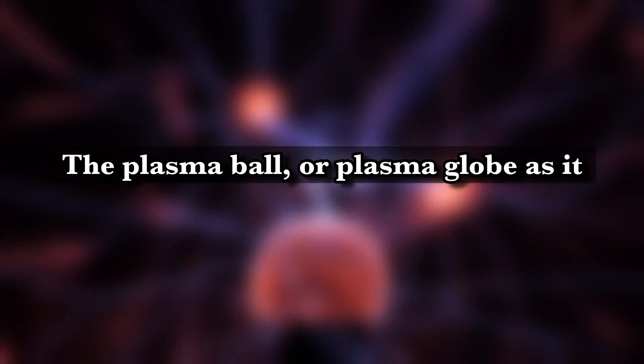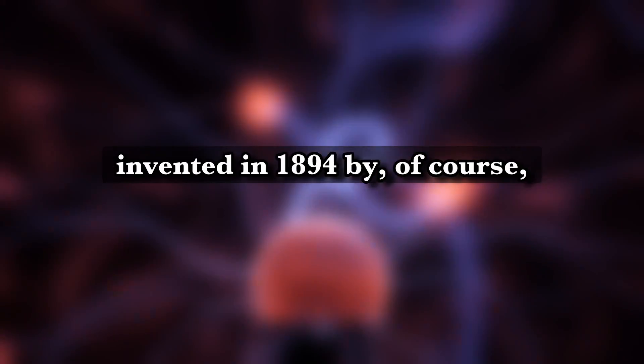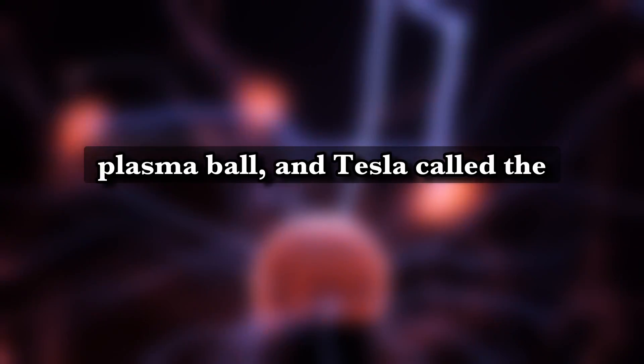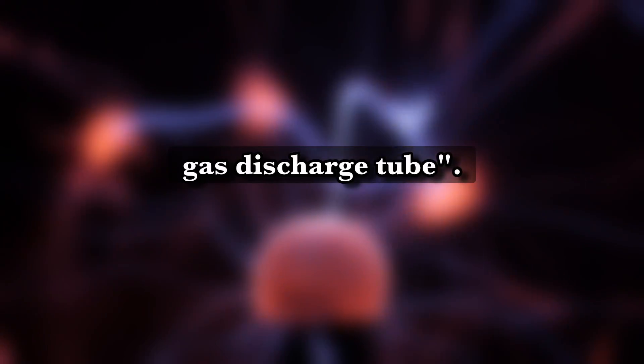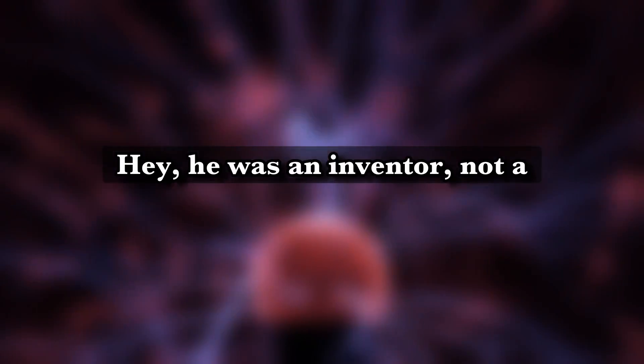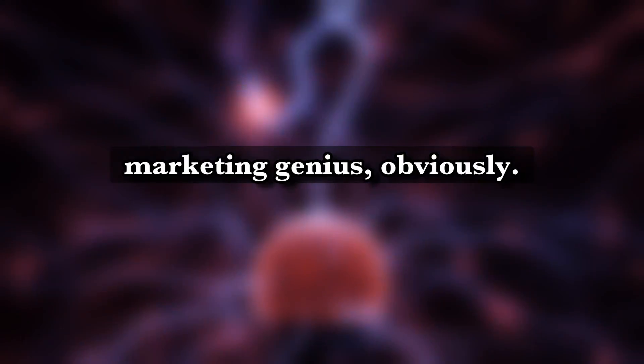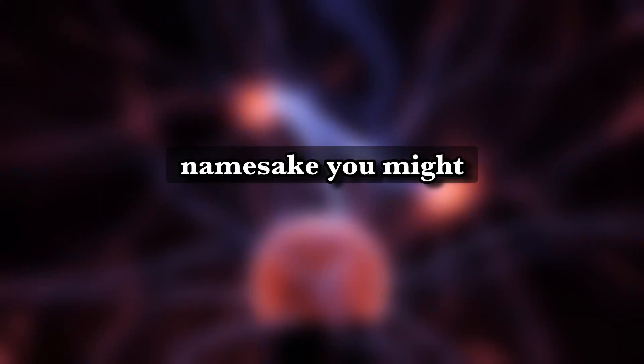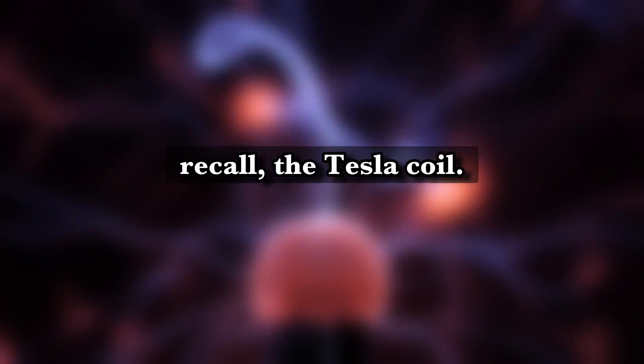The plasma ball, or plasma globe as it is also known, was invented in 1894 by, of course, Nikola Tesla. It didn't look exactly like our modern plasma ball, and Tesla called the invention the inert gas discharge tube. Catchy. Hey, he was an inventor, not a marketing genius. Obviously. Ahem, Edison. Tesla invented another device of his namesake you might recall. The Tesla coil.